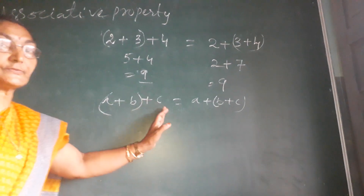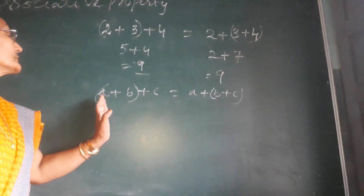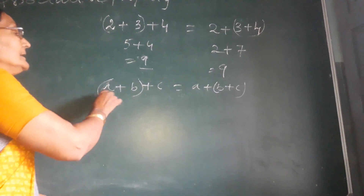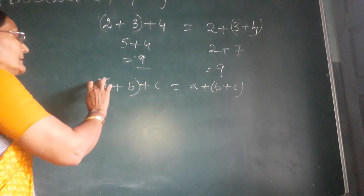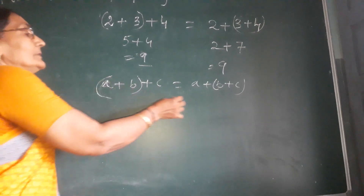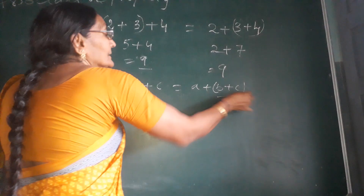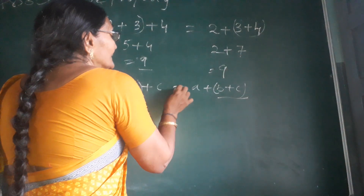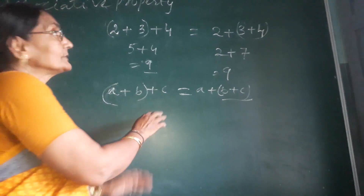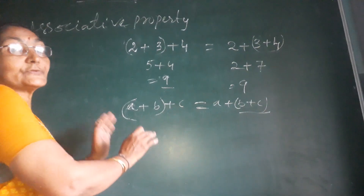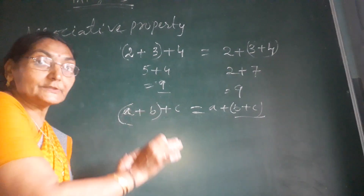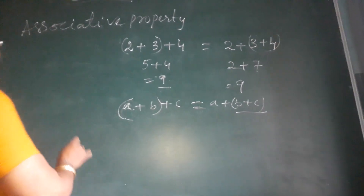So A plus B plus C: first I group these two, then add the third. Or group the other two first — the same answer will come. That is called the associative property of integers.